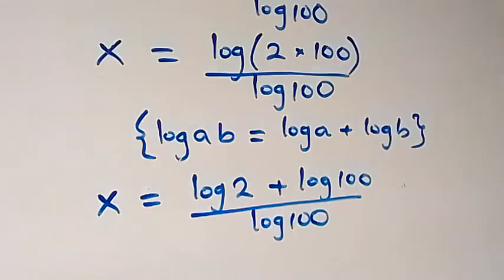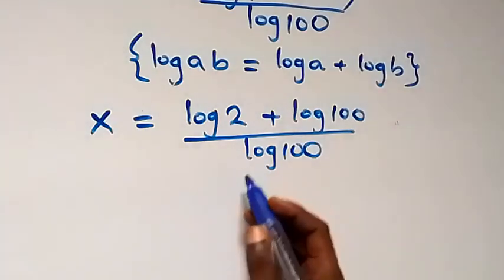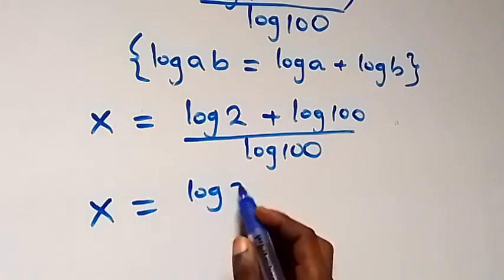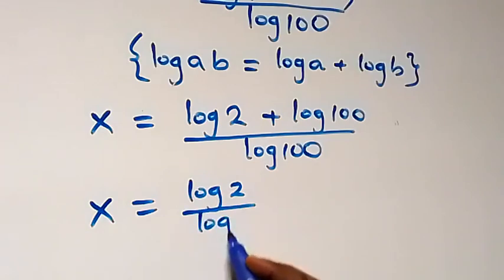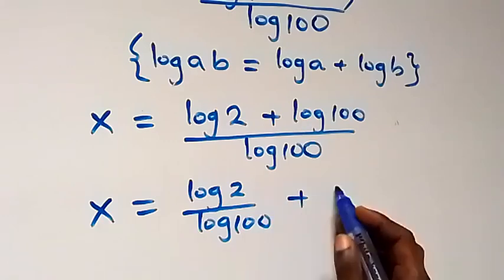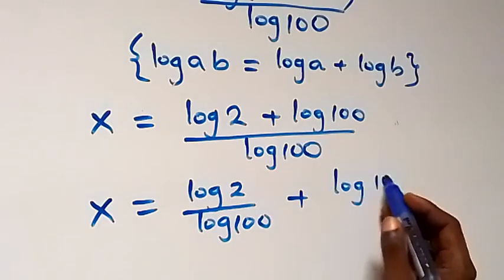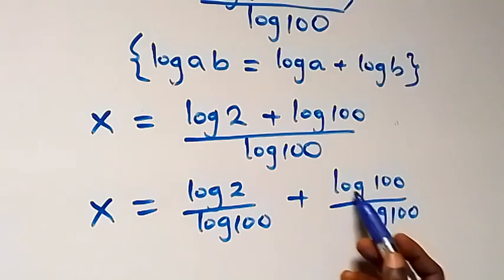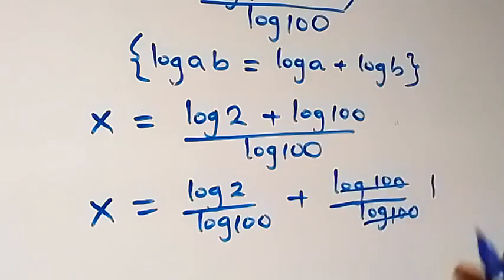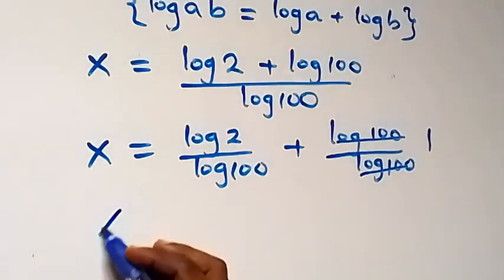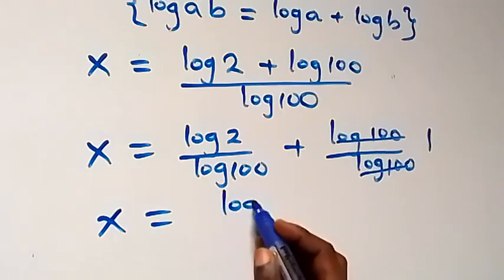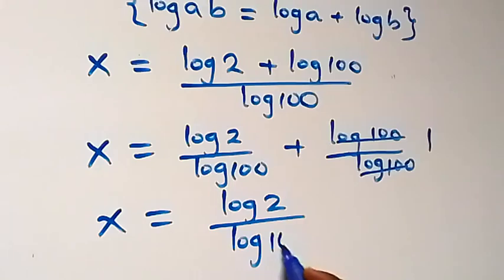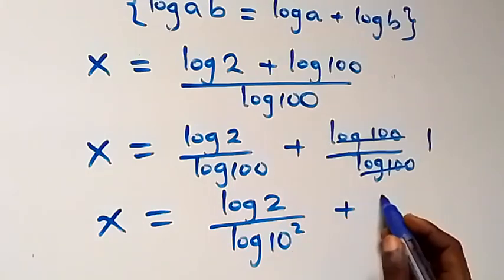From here we can separate this into two fractions: x equals log(2) over log(100), plus log(100) over log(100). Log(100) over log(100) cancels to give 1. Then let's write 100 as ten squared, so we have x equals log(2) over log(10²), plus 1.